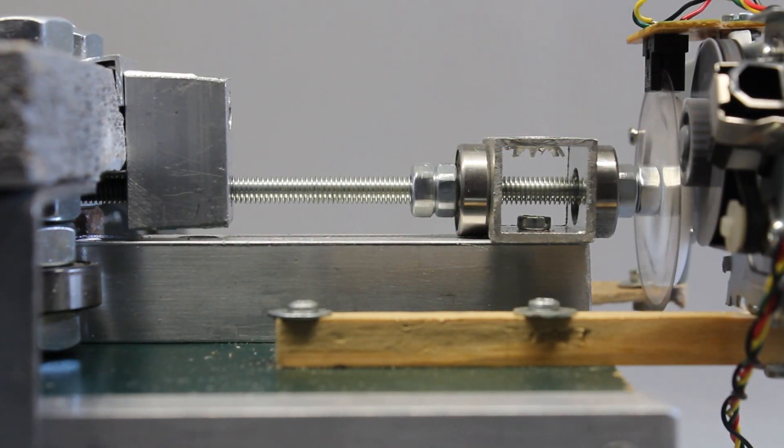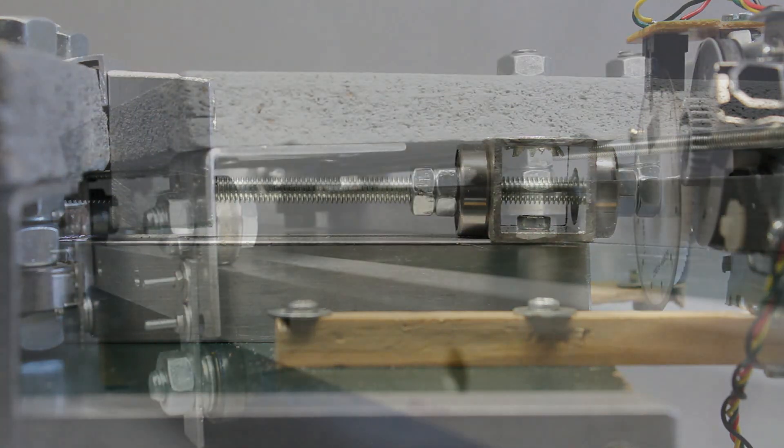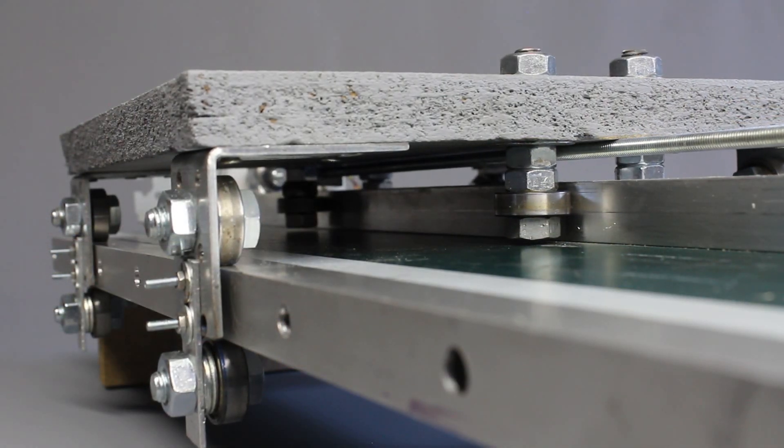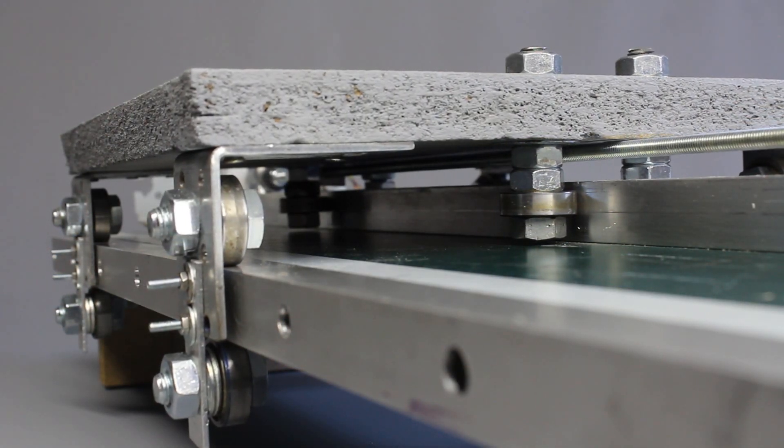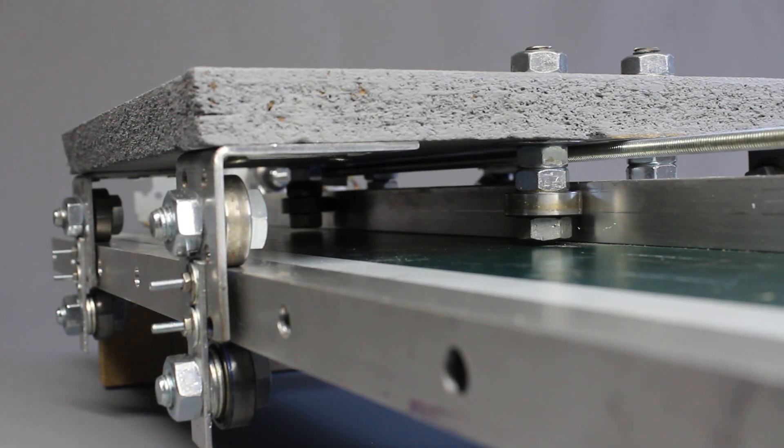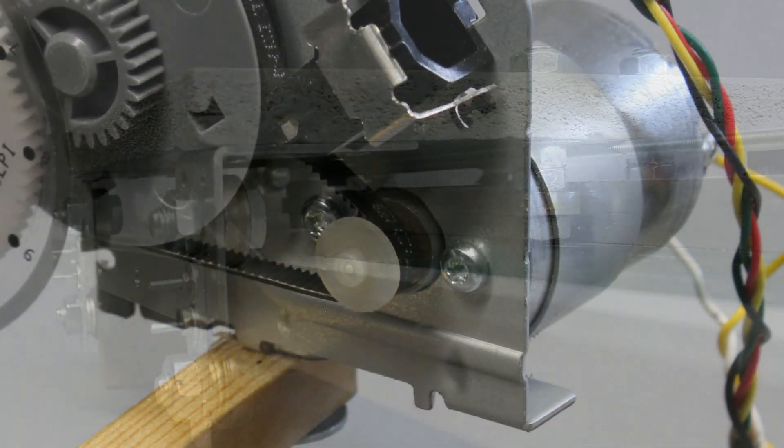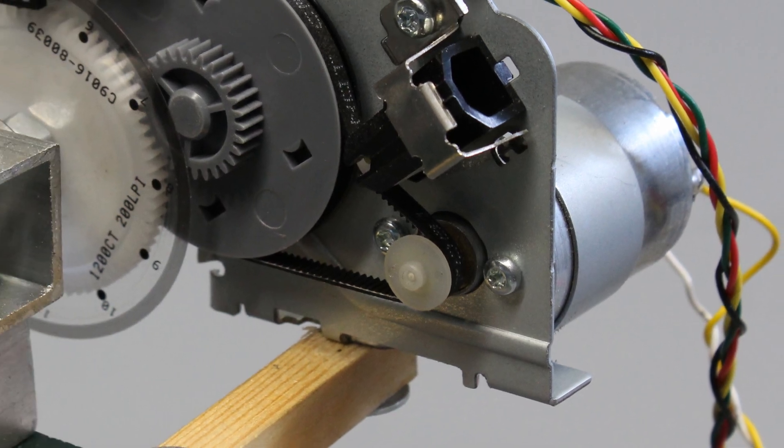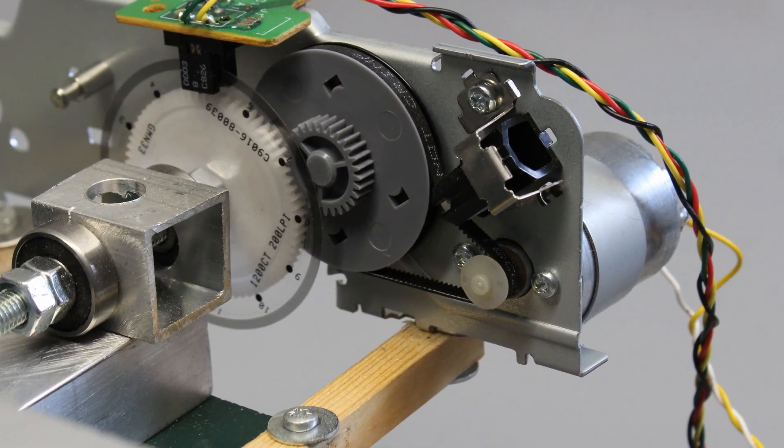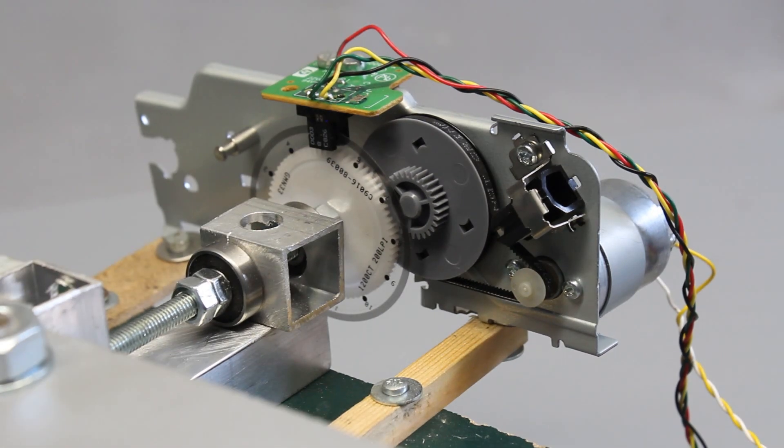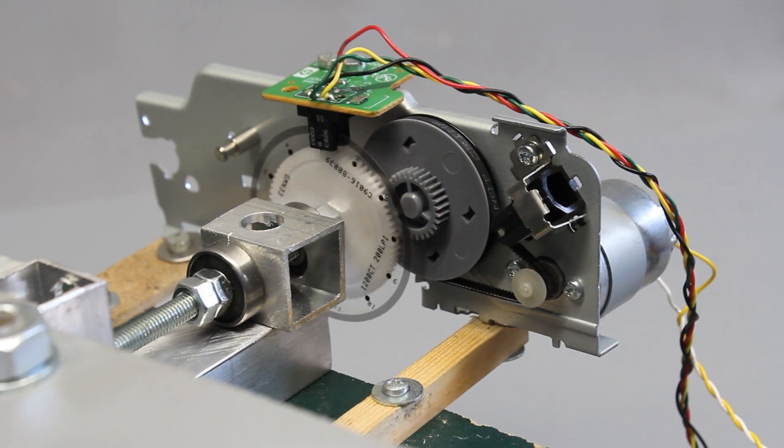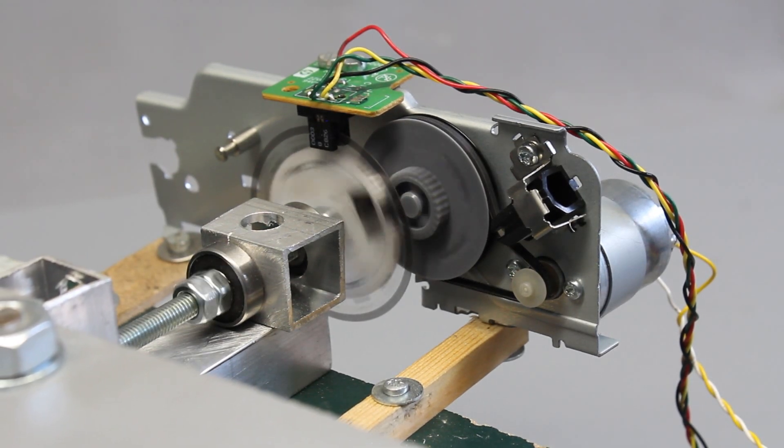Whenever the thread is turned by the motor, the carriage moves along the aluminum square tubes guided by ball bearings. The brushed DC motor is from an old printer and the gear ratio of the plastic wheels is 12 to 1. The pitch of the thread is 1mm per turn.